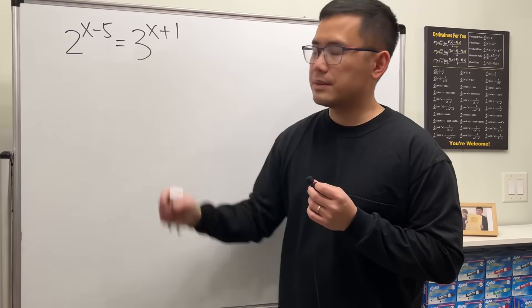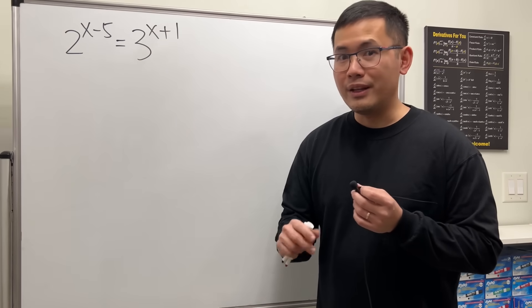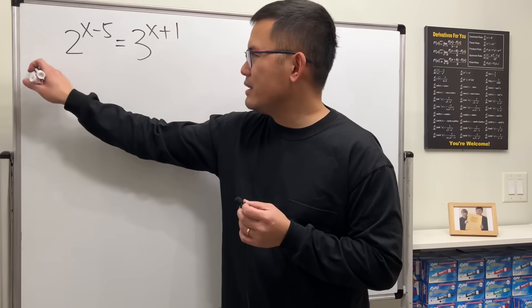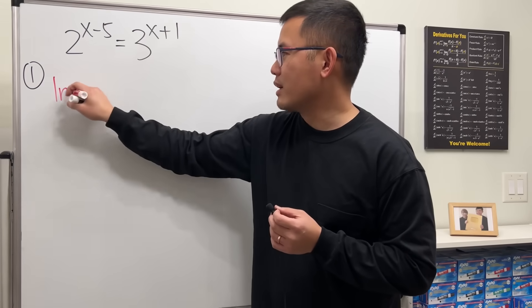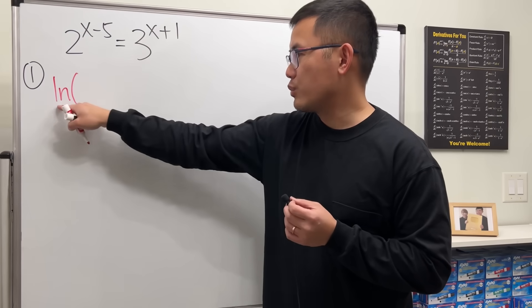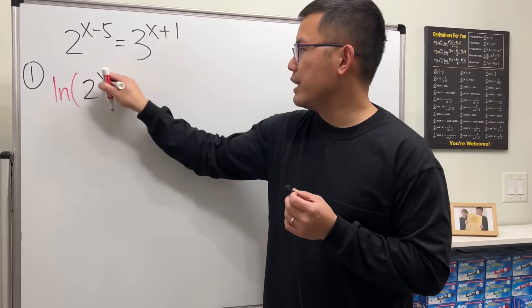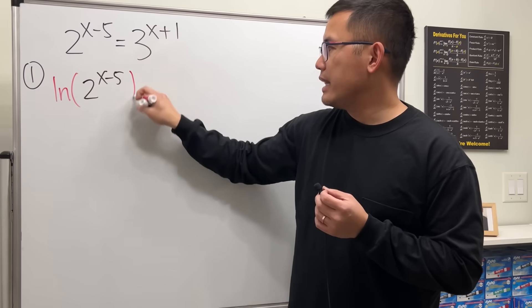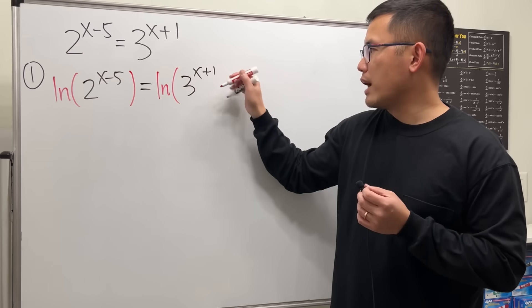Whenever the x is in the exponent, try to take the natural log on both sides. In fact, I'll show you another way to do it after this. But the natural way is take the natural log on both sides, or any log that you want. Let's just do natural log, which is the ln. So we have ln of 2 to the x minus 5, and that will be equal to ln of 3 to the x plus 1.